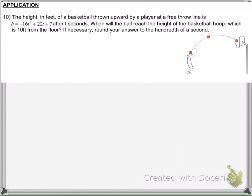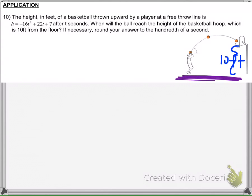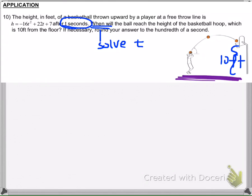It asks: when will the ball be 10 feet from the floor? The basketball hoop is 10 feet from the floor, and we want to know when that will happen. H is the height and T is the time. We're trying to find out when the ball will reach that height, so that means we're solving for T. We need to solve for when the height of the basketball hoop is 10 feet from the ground — so we need to solve this equation right here.